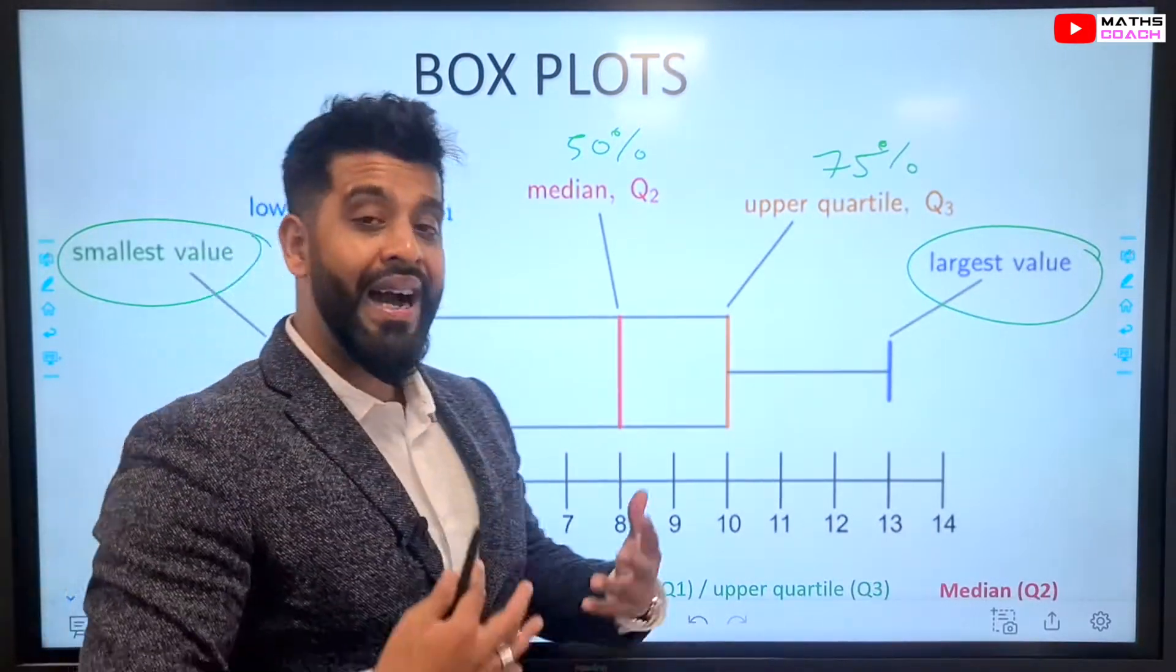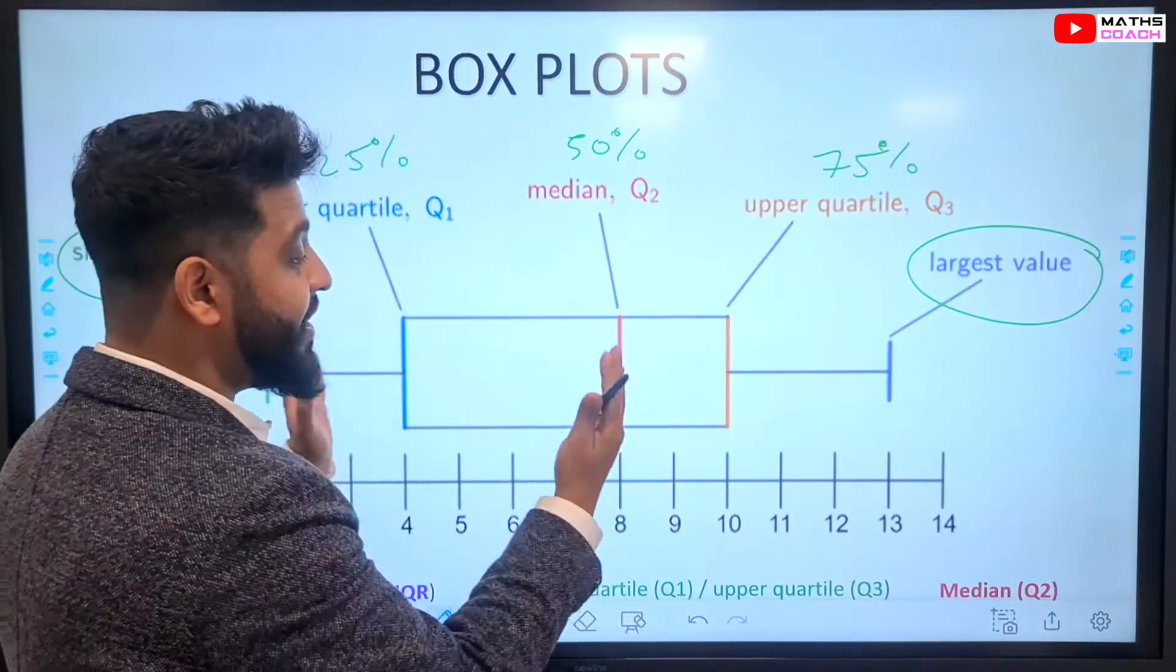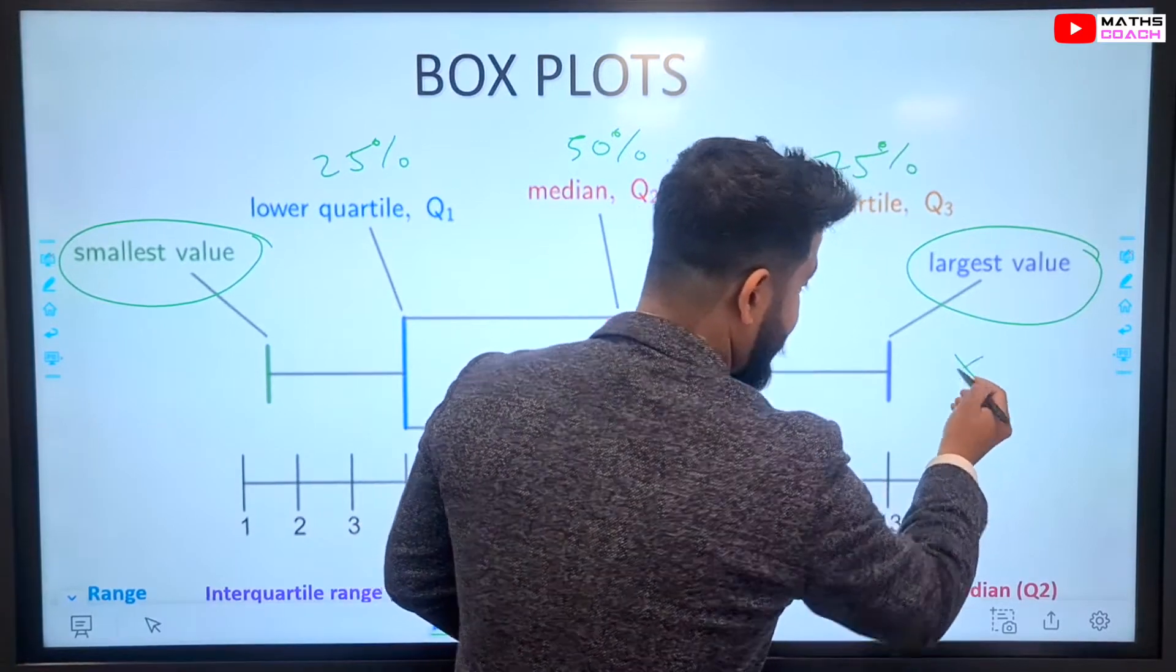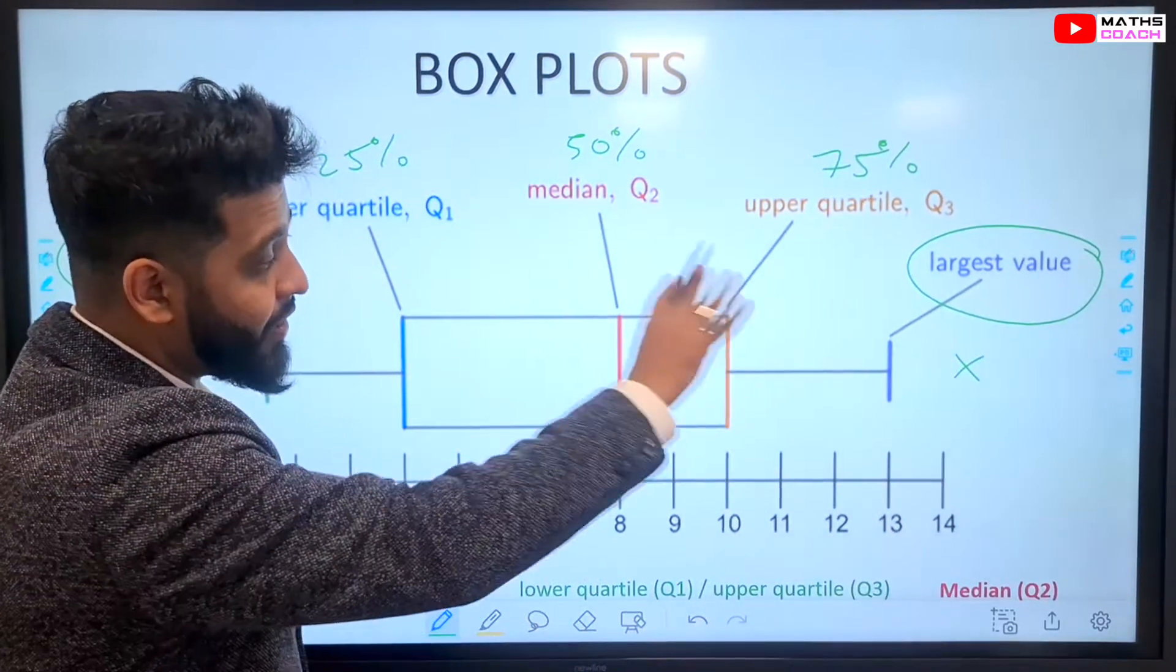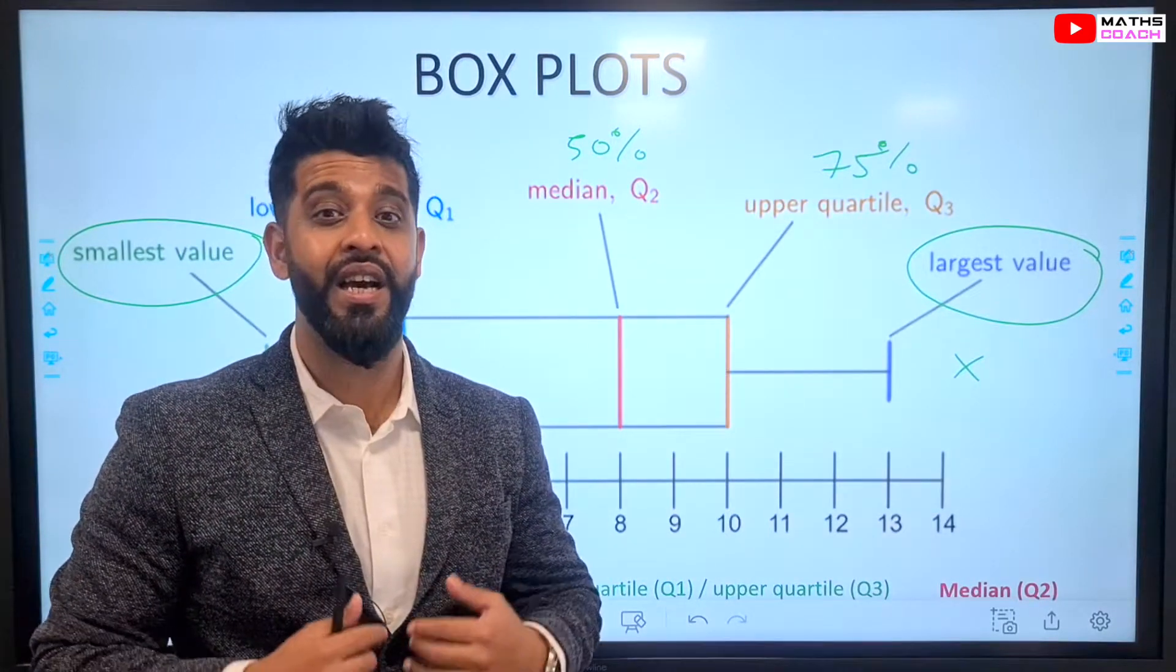Some box plots may include outliers. Outliers means data that doesn't fit into your data set. They are usually represented with an X, which means that they're outside of that range, and they're not included. An outlier is also known as an anomaly.